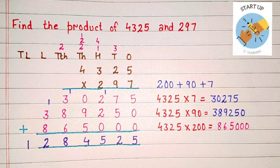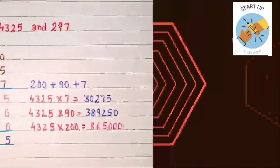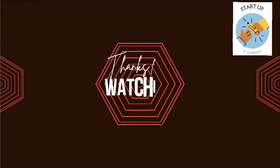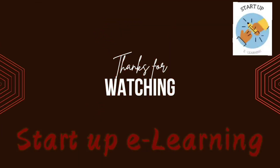By multiplying 4325 and 297 we got the final product: 12,84,525. I hope my videos are helping you in understanding the concept of long multiplication. If you like my videos, do like, share, and subscribe to my channel. Thank you for watching Startup E-Learning — have a blessed day!